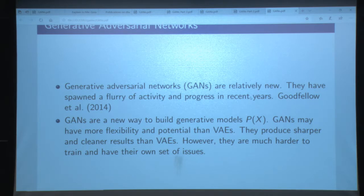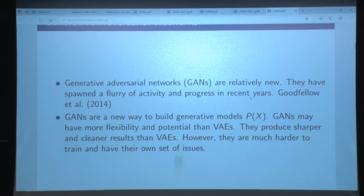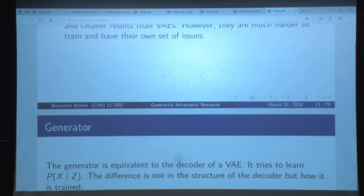GANs came out in 2014, relatively new, although four years is a lot of time these days. GANs are a way to build generative models — they're a little more flexible, have more potential than VAEs, sharper results, cleaner results, much more intriguing. But the problem is just training them and actually getting them to work.